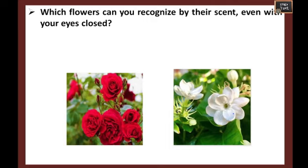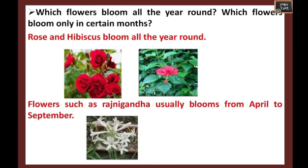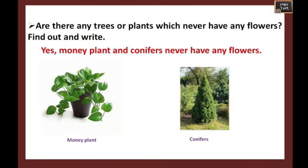Think about flowers you can recognize by their smell — you can easily recognize rose and jasmine. Next, which flowers bloom all year round, and which bloom only in certain months? Rose and hibiscus bloom all year round. Flowers like Rajnigandha usually bloom from April to September.